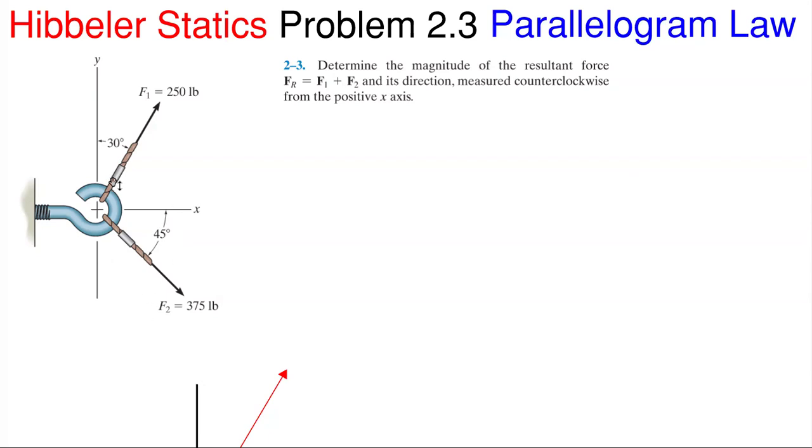We'll be finding resultant forces using Hibbler statics problem 2.3 as our work through here. We have this hook with two forces as shown, and we have to determine the magnitude of the resultant force vector Fr, which is from the combination of F1 and F2, and the resultant's direction measured counterclockwise from the positive x-axis. There are different ways to find the resultant force. One way is the parallelogram law, and that's what we're using here.